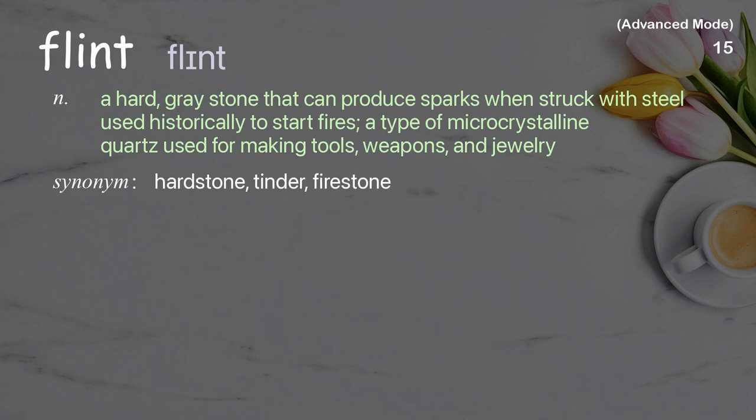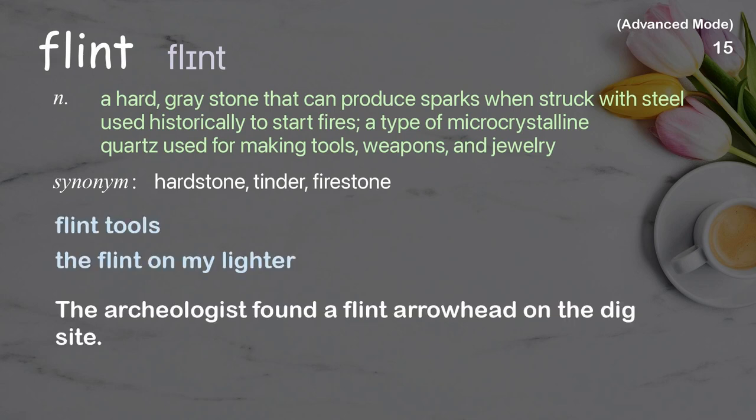Flint. A hard, grey stone that can produce sparks when struck with steel, used historically to start fires. Also, a type of microcrystalline quartz used for making tools, weapons, and jewelry. Examples: flint tools, the flint on my lighter. The archaeologist found a flint arrowhead on the dig site.